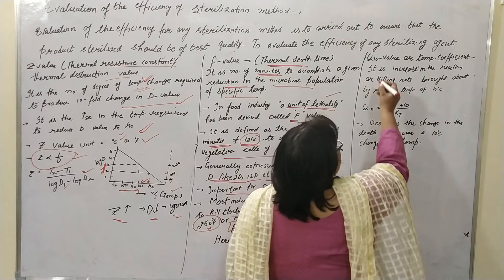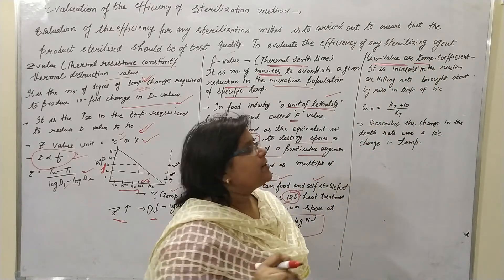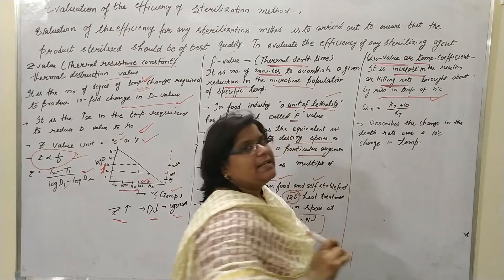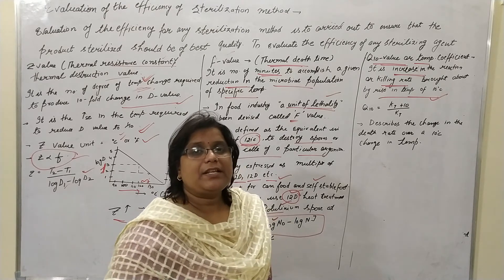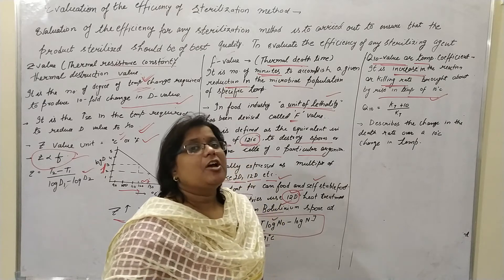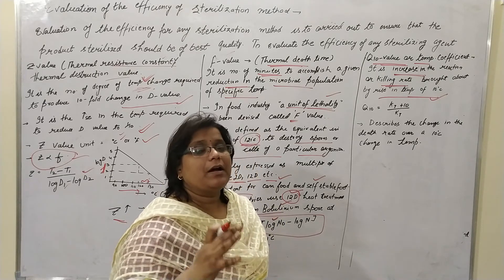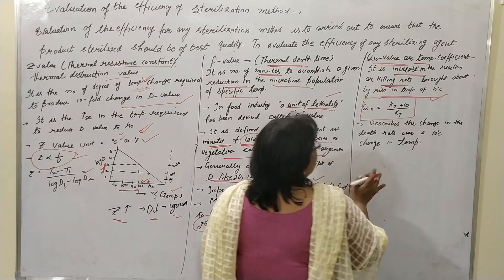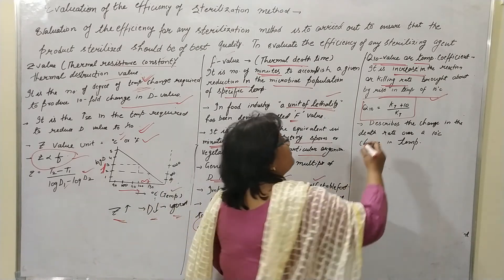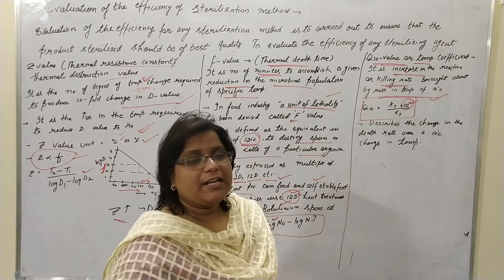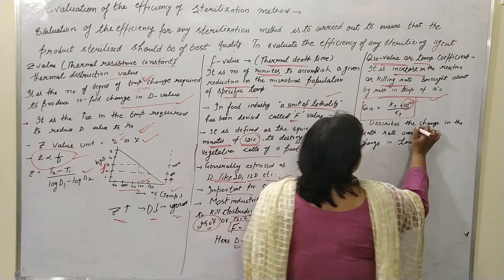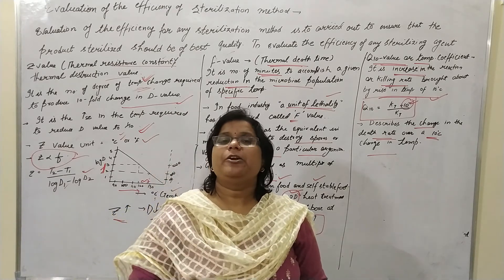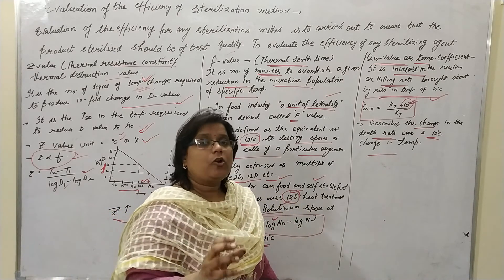Now the second-to-last parameter is the Q10 value or the temperature coefficient. The Q10 represents the increase in the reaction or killing rate by increasing the temperature by 10 degrees Celsius. It means, if we increase the temperature by 10 degrees Celsius, how much efficiency of the sterilizing agent is increased or enhanced. The Q10 is represented by k(t+10) divided by k(t), where k(t) is the rate at temperature t and k(t+10) is the rate at 10 degrees higher. It describes the change in the death rate over a 10 degree Celsius change in temperature.